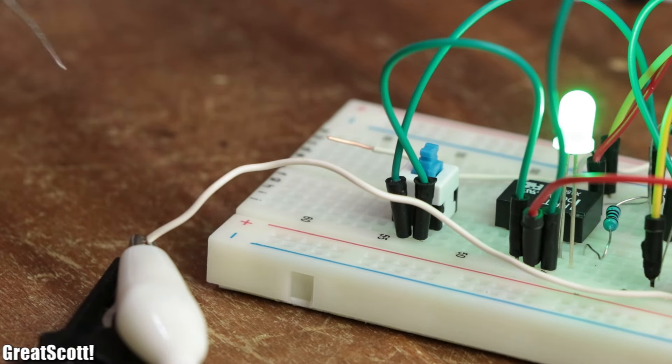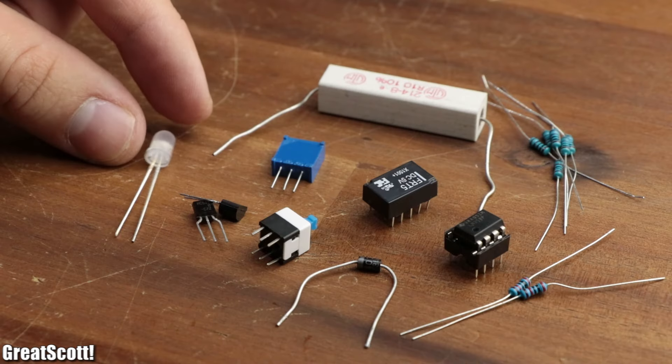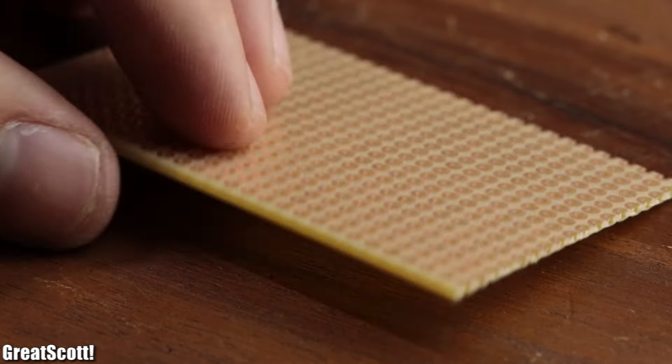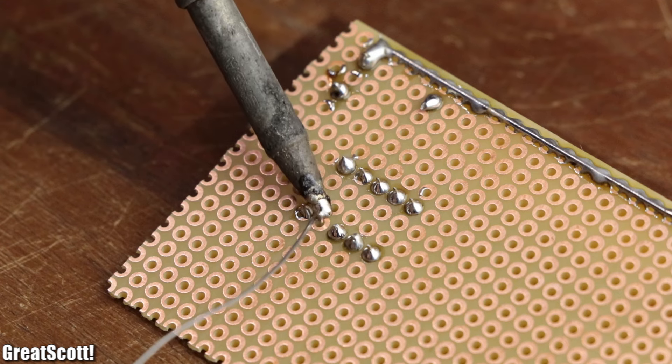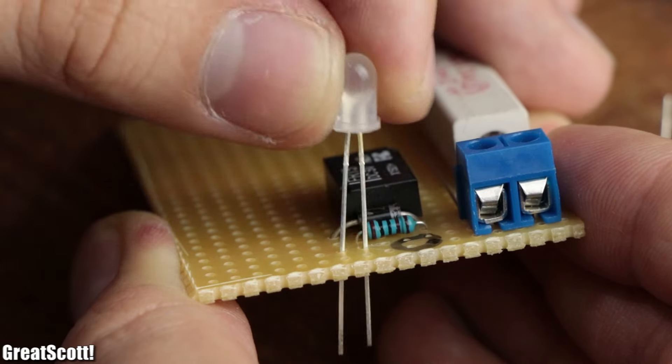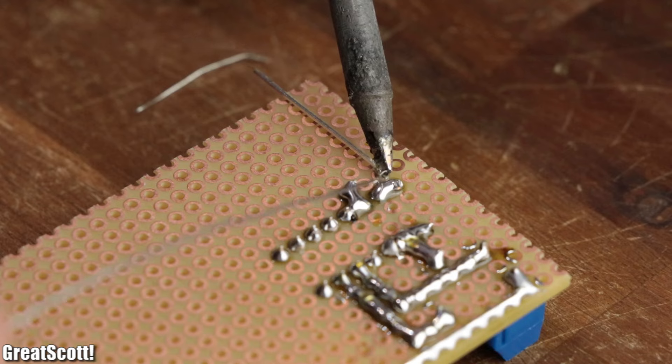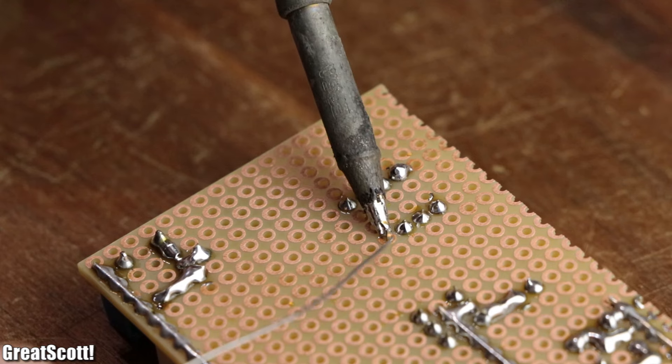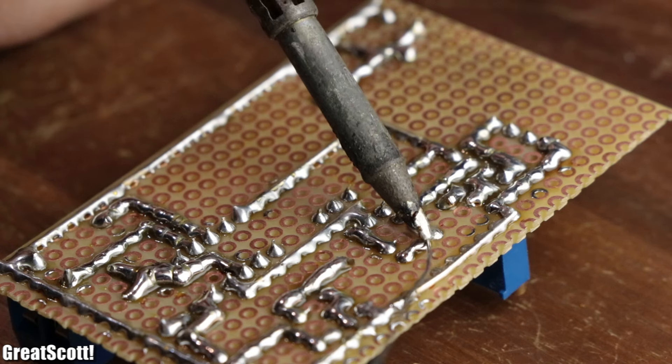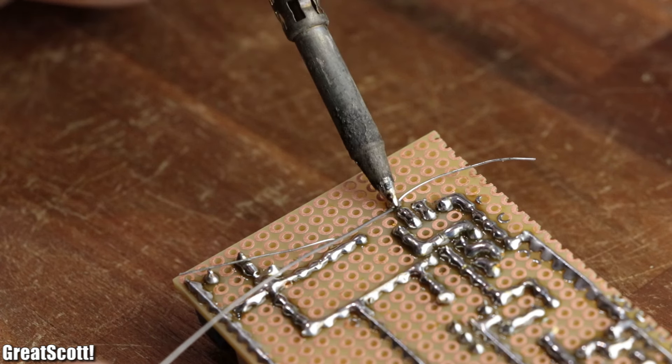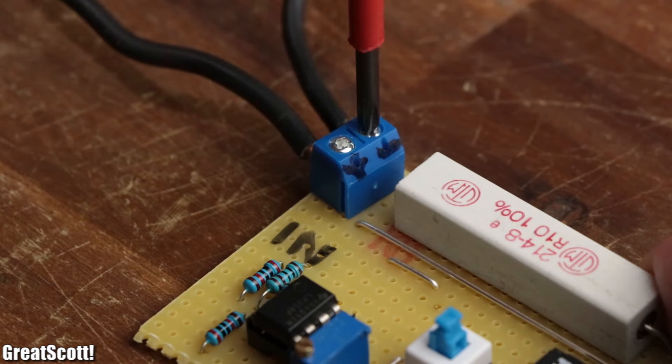Now that I knew that everything worked fine, I gathered all the required components for the final proper circuit along with a piece of perfboard with copper dots and soldered all the components onto it. And of course you can find pictures of my layout design along with the schematic and a parts list as always in the video description.